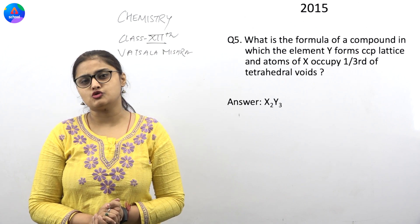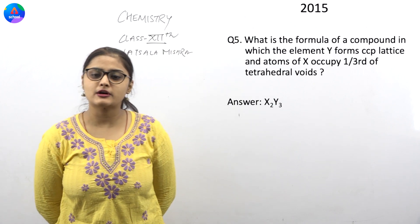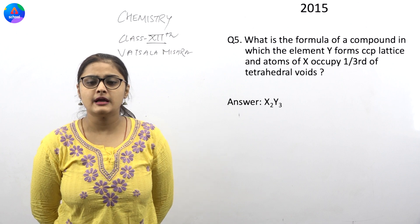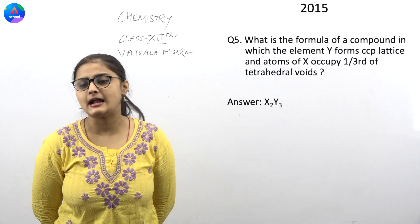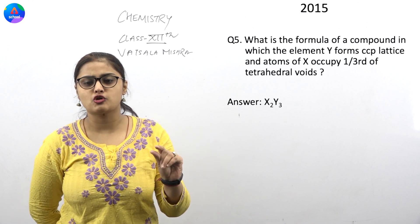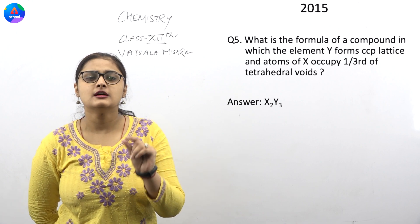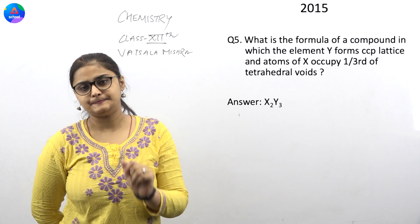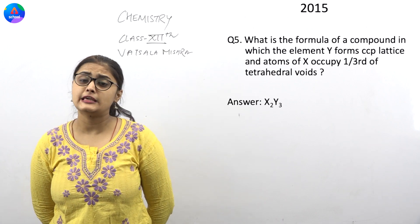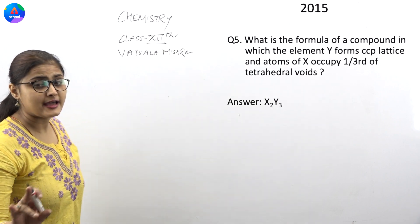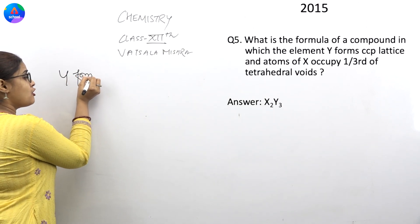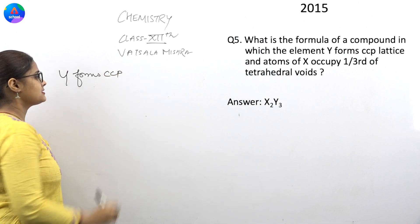Question 5, what are you trying to say? It says, what is the formula of a compound in which element Y forms CCP lattice and atoms of X occupy one-third of tetrahedral voids? So, you need to know what they want to say. Basically, if they have said that Y forms CCP, so Y forms CCP.